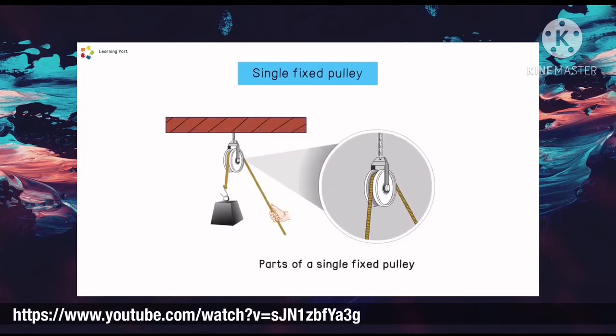The parts of a single fixed pulley are the wheel with a groove, axle, rope, and load.